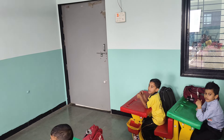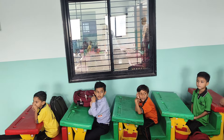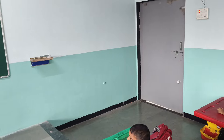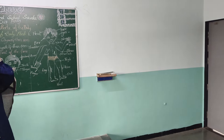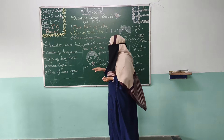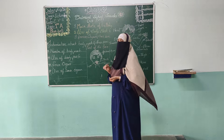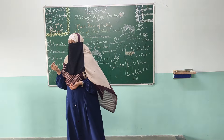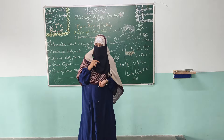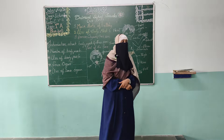Very good. Now these are the uses of our parts of the body. Next is our sense organ. With the help of sense organs we can feel things, we can see things. Name the sense organs. How many sense organs do we have? Five.